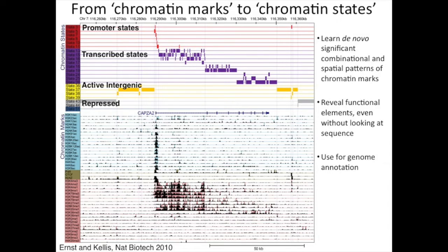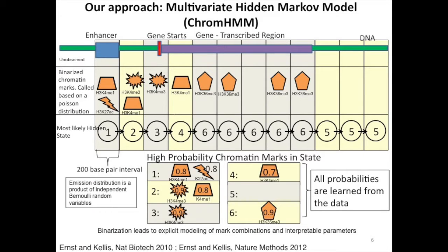We're underlying the assumption that there are these different classes of elements that we don't get to observe directly. But what we do observe after preprocessing is a binary presence or absence call for each of the input tracks, whether we had enough reads supporting its presence at a specific location. Then we make a modeling assumption that at each location we're in one of a finite number of hidden states, and associated with each of these hidden states are different probabilities of observing different modifications.